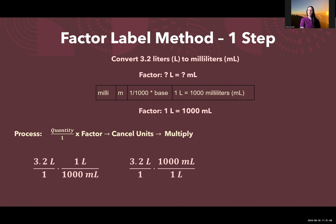We have two potential setups here. We could take our quantity, 3.2 liters over one, and multiply it by one liter over 1,000 milliliters. Or we could take 3.2 liters over one and multiply it by 1,000 milliliters over liters. We need to think about what is going to allow us to cancel.